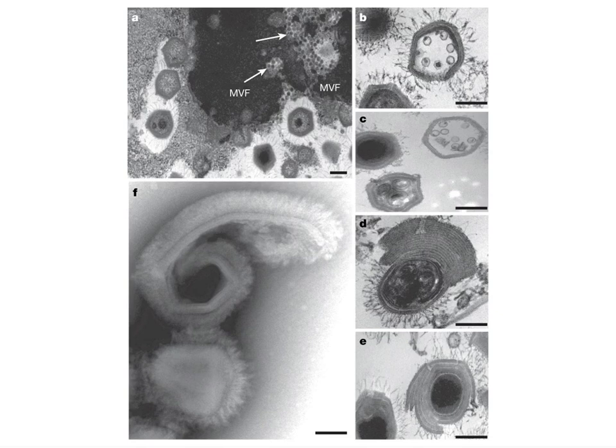Sputnik depends on mimivirus to provide functions, so these are viruses that lack genes they need for replication. The Sputnik interferes with mimivirus replication — you can see it causes very strange particles to be made. This is a normal mimi particle, and this one is completely broken. Many have multiple layers of proteins on the surface. In some cases, the Sputnik is actually encapsulated into mimivirus particles, which could explain why Sputniks interfere with mimivirus replication.